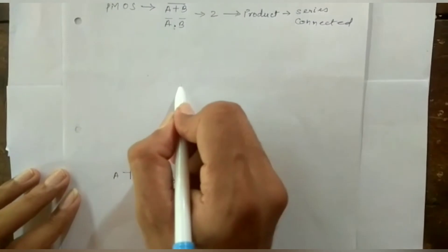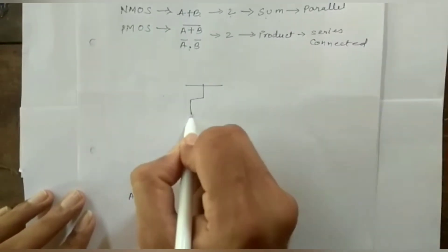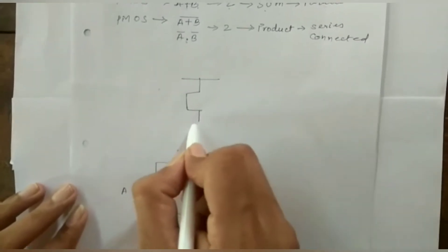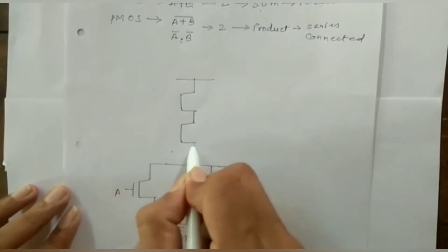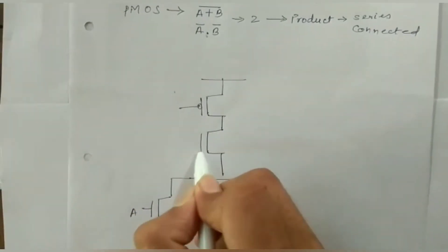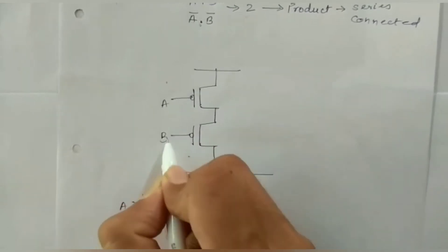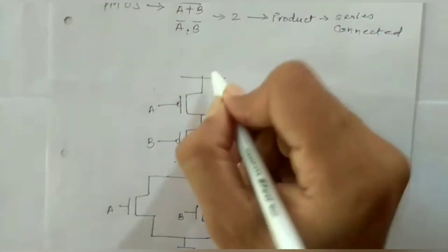And here above we will draw PMOS which is connected in series. Here we will draw A and this is B. These are connected in series.